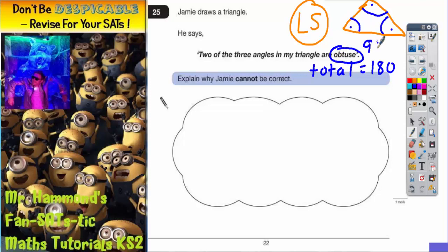So let's say two of these angles are 91. So we'd have 91 and 91. Now straight away, if you add those two together, 91 and 91, you'll notice what happens.